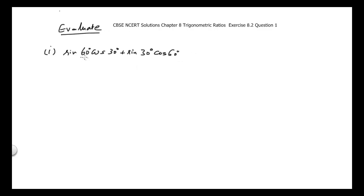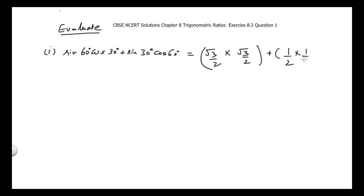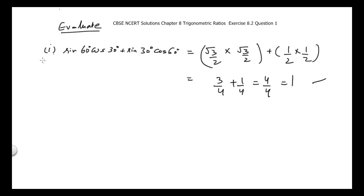We just need to put the values: sin 60° = √3/2, cos 30° = √3/2, sin 30° = 1/2, and cos 60° = 1/2. So we get (√3/2)(√3/2) + (1/2)(1/2) = 3/4 + 1/4 = 4/4 = 1. So that's Part 1.